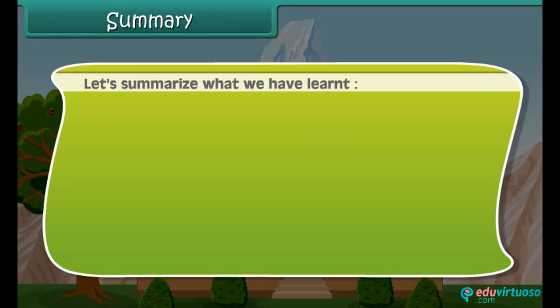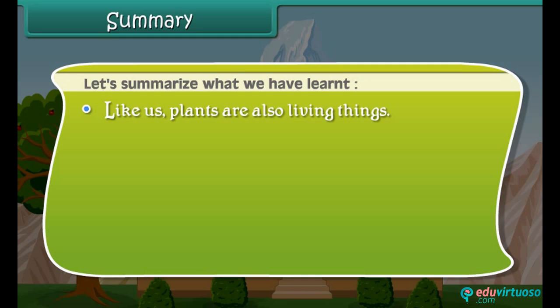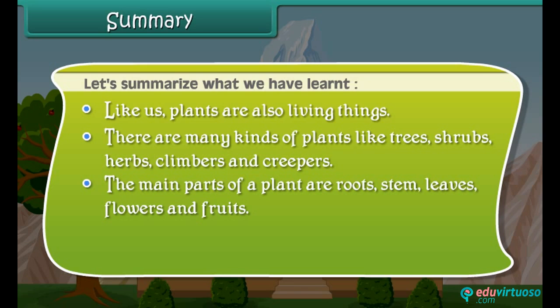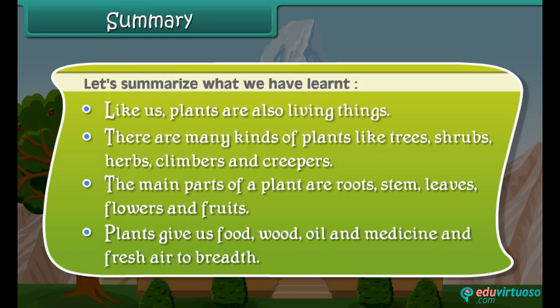Let us summarize what we have learned. Like us, plants are also living things. There are many kinds of plants: trees, shrubs, herbs, climbers, and creepers. The main parts of a plant are roots, stem, leaves, flowers, and fruits. Plants give us food, wood, oil, medicine, and fresh air to breathe. Thank you.